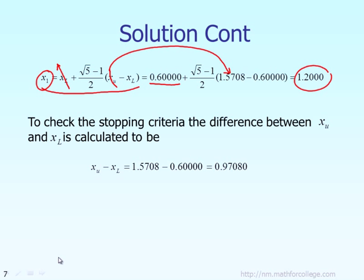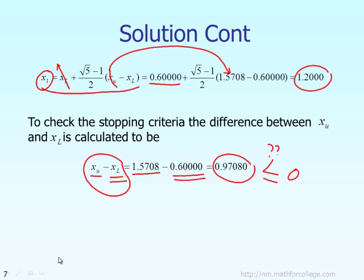Once you know the new upper bound, which equals the old upper bound 1.57, and the new lower bound, which is 0.6, you can calculate the length of the new interval as the difference between upper and lower bounds, which turns out to be 0.97. Then you compare that new interval and ask: is it smaller than or equal to the tolerance of 0.05? This tolerance is specified by the user. If true, you stop; otherwise, you keep iterating.